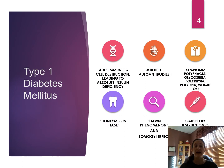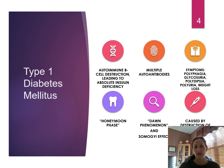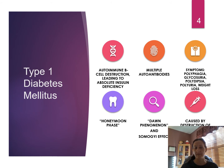While the onset of type 1 diabetes is sudden, it can go unnoticed over time. We've had kids enter the ER with a blood glucose of over 1000 mg/dL, incoherent, not alert, and going into a coma. At that point they go into DKA, which we'll discuss further.